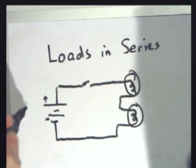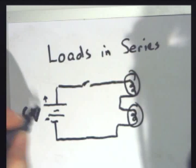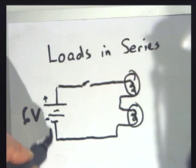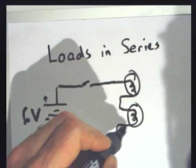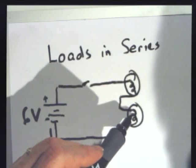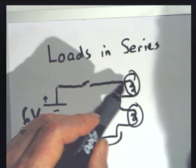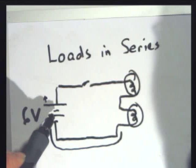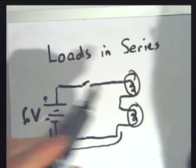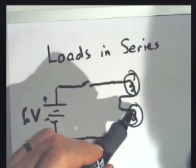So I'm going to use up my energy as I run through here. If I have a 6-volt battery, then the electrons are rushing through here. They've got to run a gauntlet. They've got to run through this light bulb, they lose energy. They run through this light bulb, they lose energy to get back to here. So I've got a voltage drop across each of these bulbs.